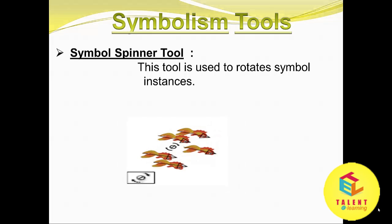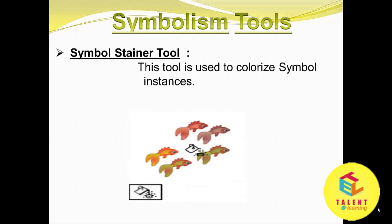Symbol Spinner tool: we can use this tool to rotate symbol instances. This is the icon for the Symbol Spinner tool. The object will rotate in both clockwise and anti-clockwise directions.